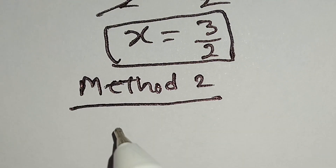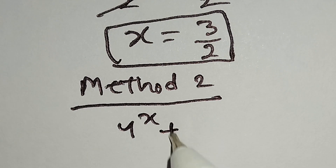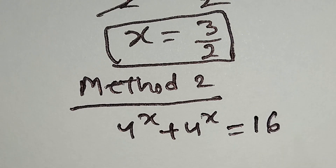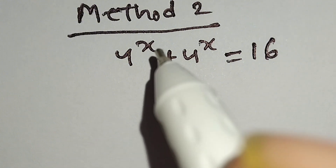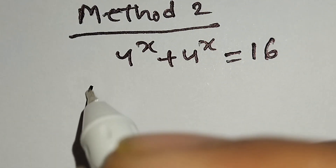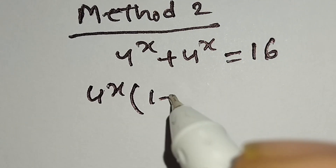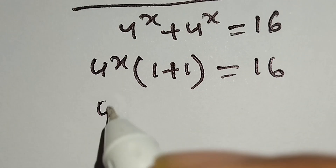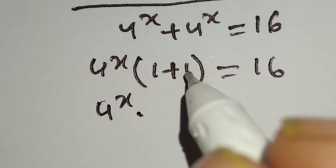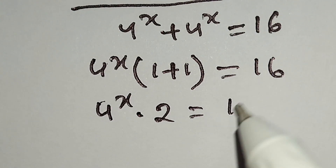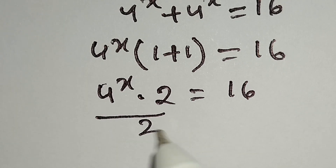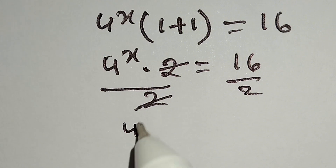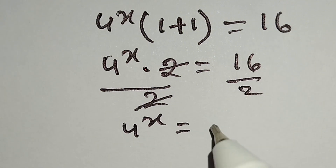Our problem is 4 to the power x plus 4 to the power x is equal to 16. We take 4 to the power x common: 4 to the power x times 1 plus 1 is equal to 16. Now we divide both sides by 2, and 2 and 2 cancel, so 4 to the power x is equal to 16 over 2, which is equal to 8.